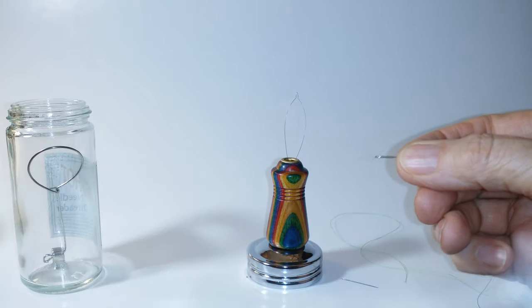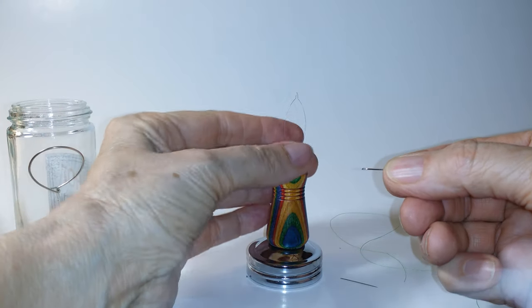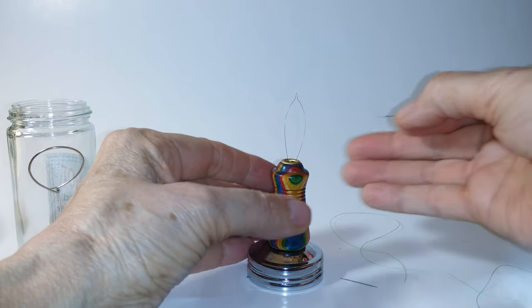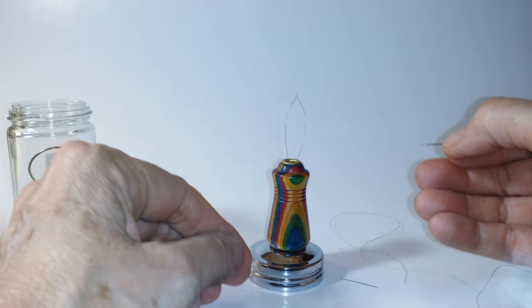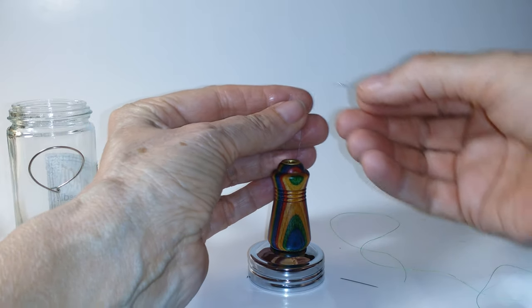First, pick up your needle and find the eye by rotating it until you see it. It's good to work with a white background so you can see the wire and the needle's eye.